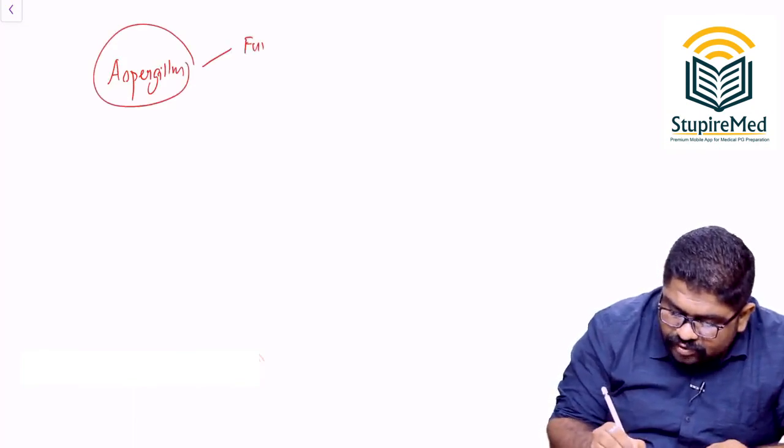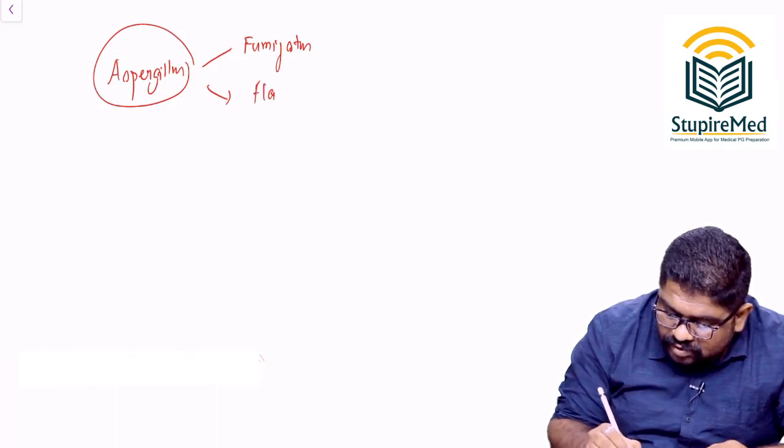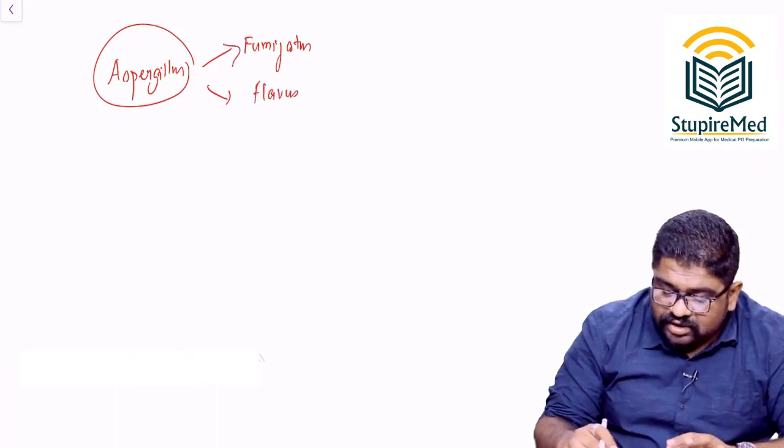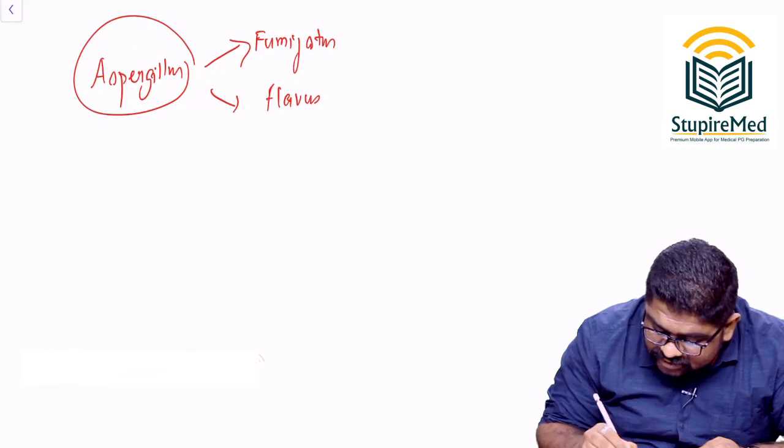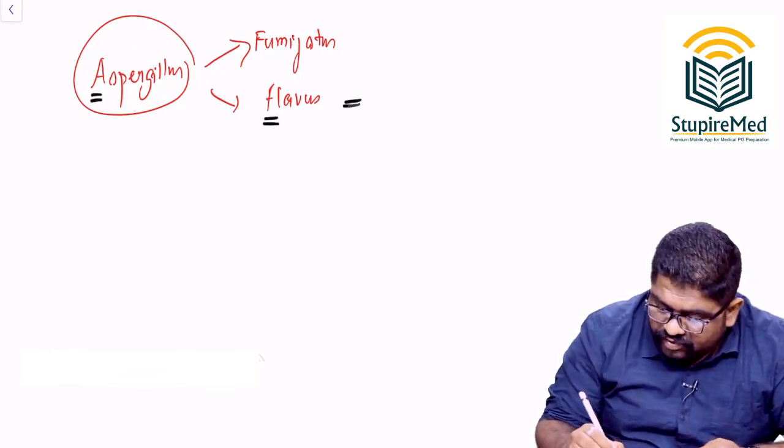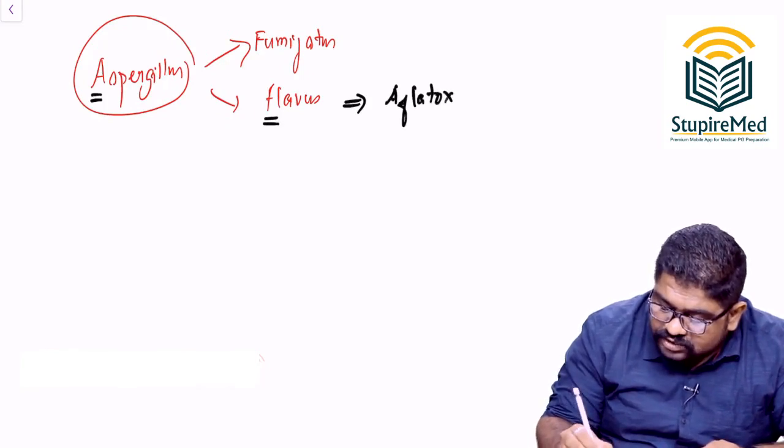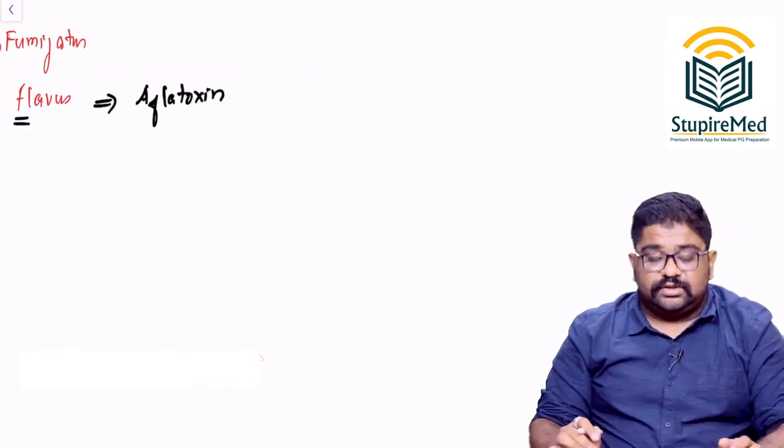You have Aspergillus fumigatus, you have Aspergillus flavus. What is the thing that you can learn from Aspergillus flavus? You take FL from here, you take A from here, then that will be the source of a toxin called Aflatoxin.